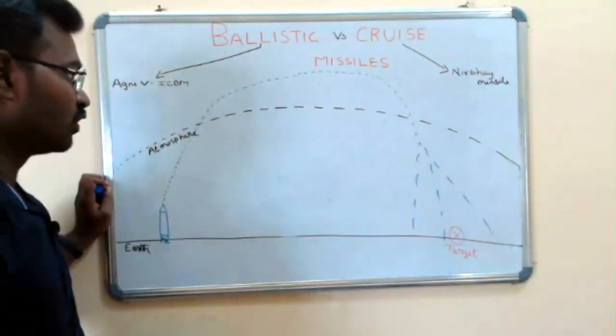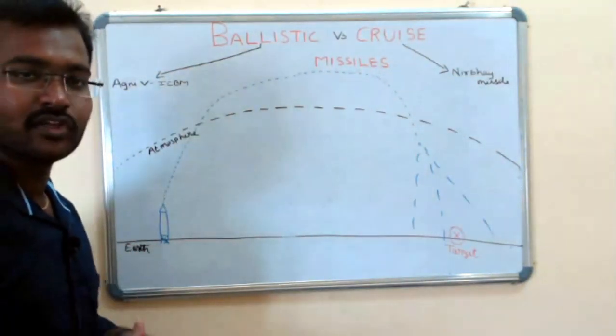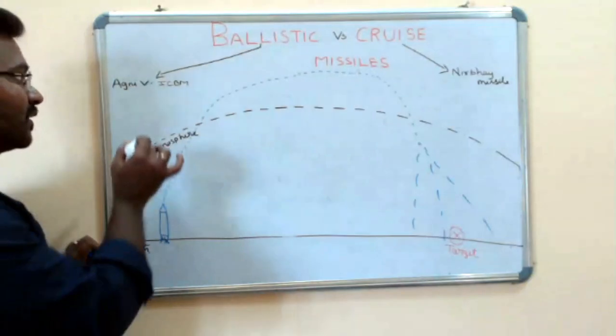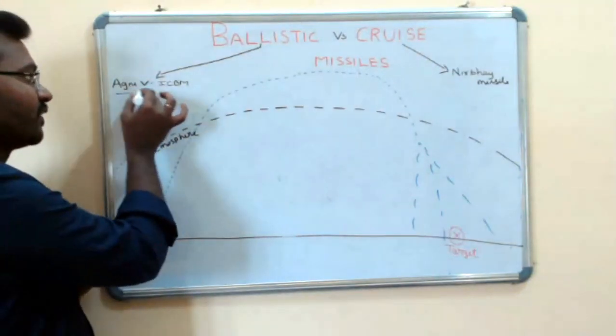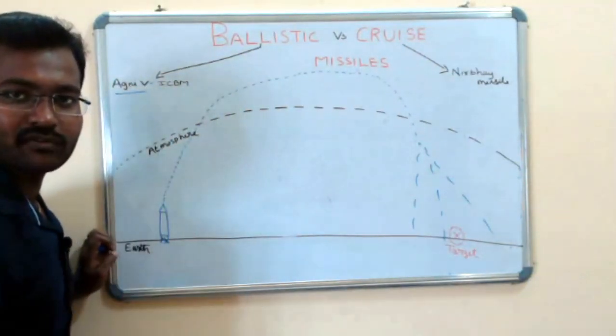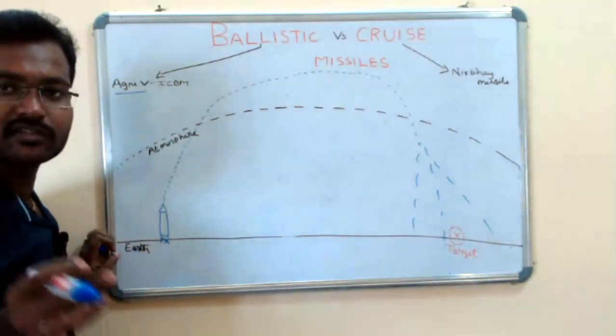So this is the Ballistic Missile. For example, Agni — this is ICBM, Intercontinental Ballistic Missile.